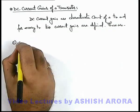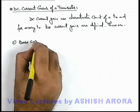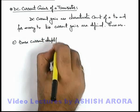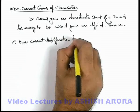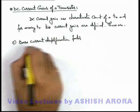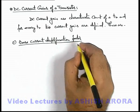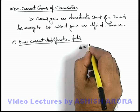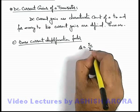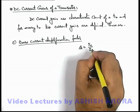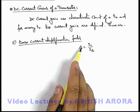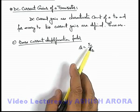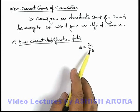The first one is the base current amplification factor, which is denoted by the symbol beta. It is defined as the ratio of collector current to base current. It gives us an idea about by how many times the collector current is above the base current.